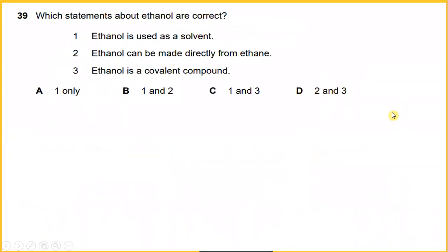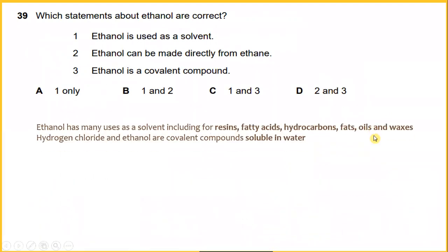Which statement about ethanol are correct? Ethanol has many uses as a solvent for resin, fatty acid, hydrocarbon, fat, oil, and waxes. So number one is already the correct answer. Hydrogen chloride and ethanol are covalent compounds soluble in water. Ethanol is a covalent compound. And ethanol can be made directly from ethene hydrogen sol. So the answer would be one and three.